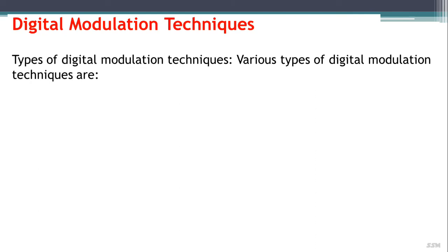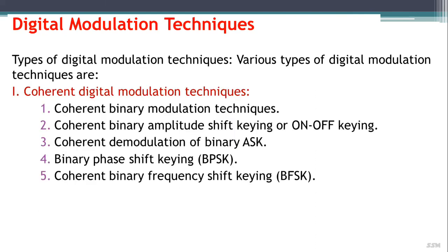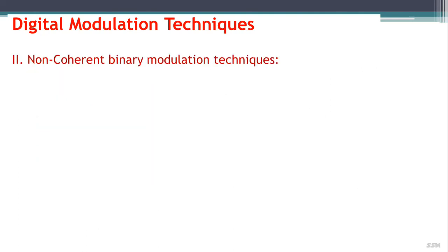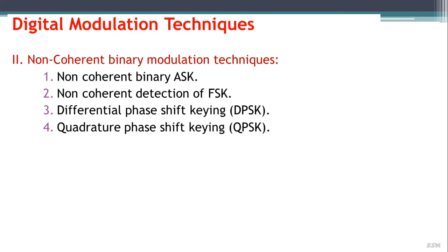The types of digital modulation techniques include coherent digital modulation techniques such as coherent binary modulation, coherent binary ASK (on-off keying), coherent demodulation of binary ASK, binary phase shift keying, and coherent binary FSK. Non-coherent binary modulation techniques include non-coherent binary ASK, non-coherent detection of FSK, differential phase shift keying, and quadrature phase shift keying.